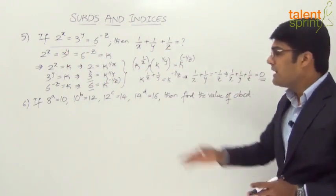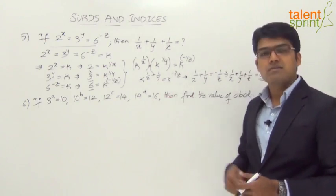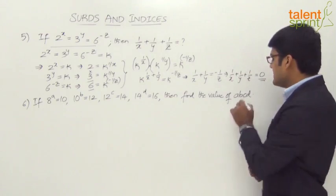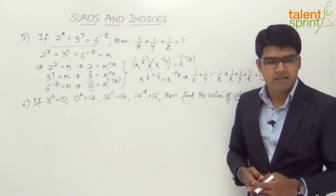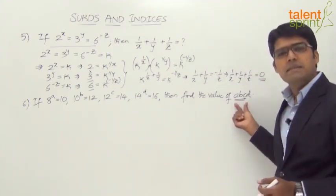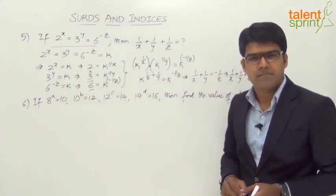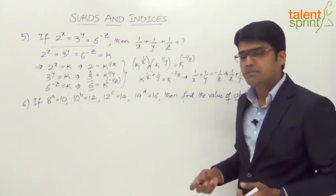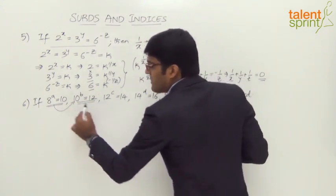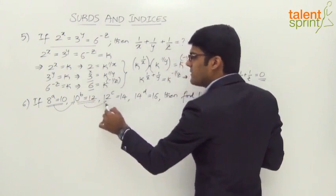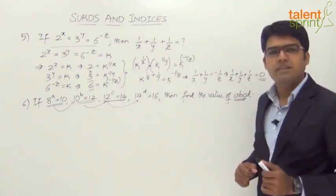Let's look at the next question. If 8^a = 10, 10^b = 12, 12^c = 14, and 14^d = 16, find the value of abcd. These are not very frequent questions but you need to be good at answering them. We want a product of all the powers a, b, c, d, so we will chain the substitutions.